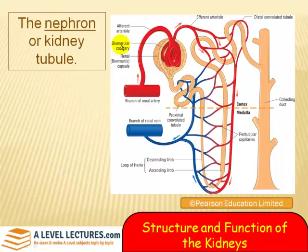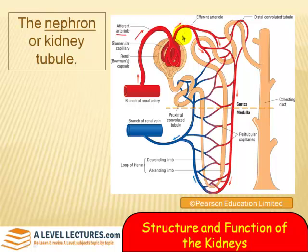Let's see what we've got. At the top here we've got what's called the afferent arteriole — an arteriole is a very, very small artery. Afferent means going towards, so this one is taking blood towards the tubule itself. Here you've got the glomerular capillary, and here we've got the efferent arteriole — efferent means taking it away. Notice the difference in diameter: the afferent is bigger than the efferent. That's really important because the smaller diameter builds up pressure, and that pressure is critical as we'll see later. This glomerular capillary forms what we call the glomerulus. Around it you've got the renal, or Bowman's, capsule.